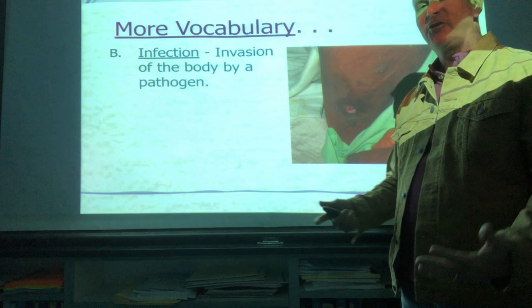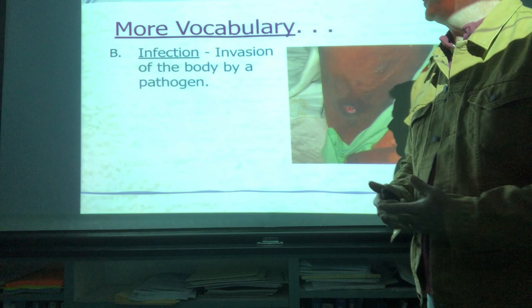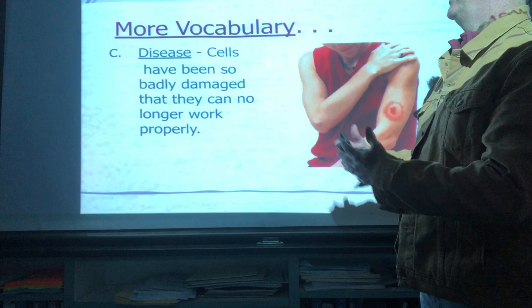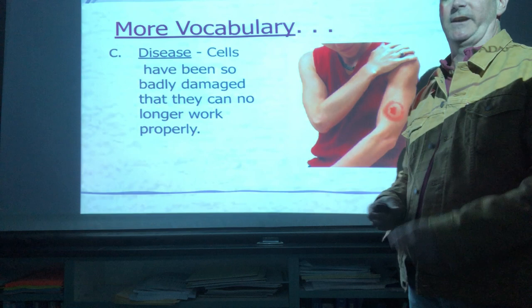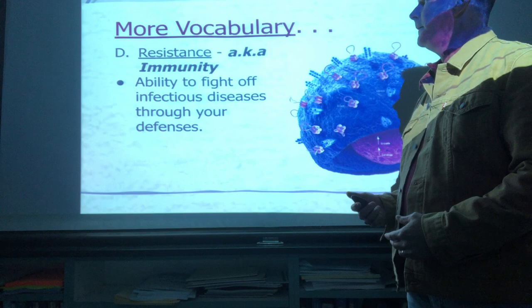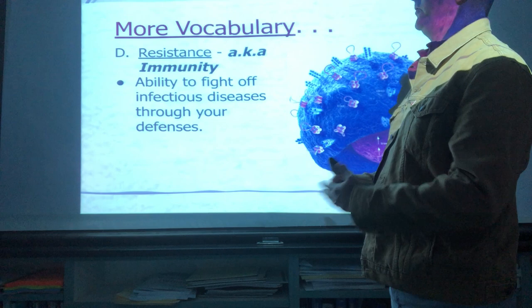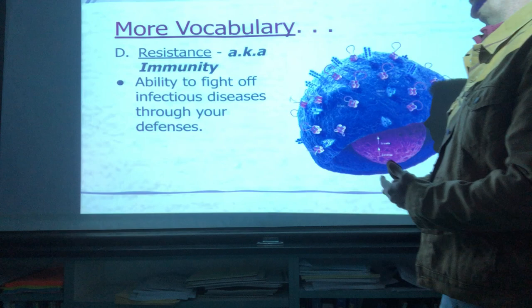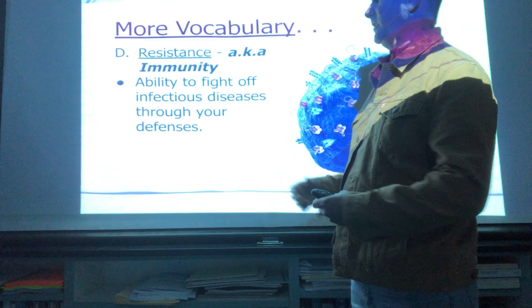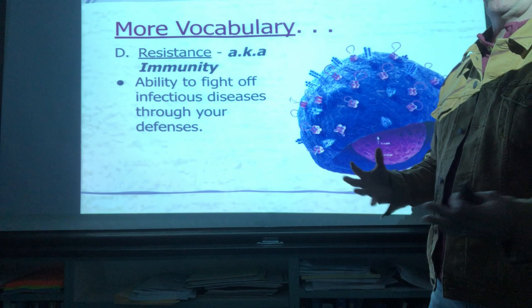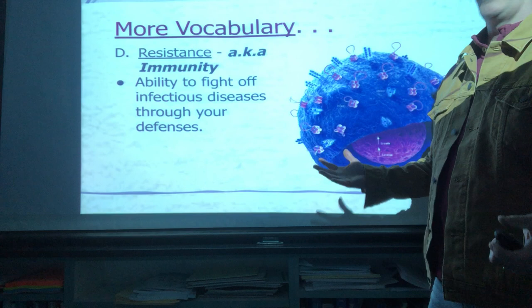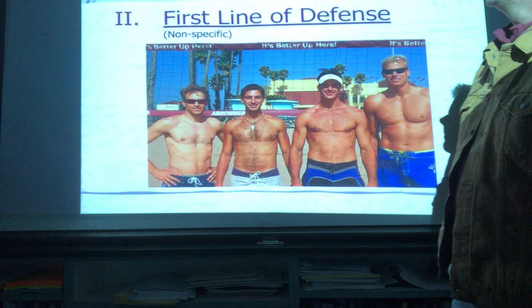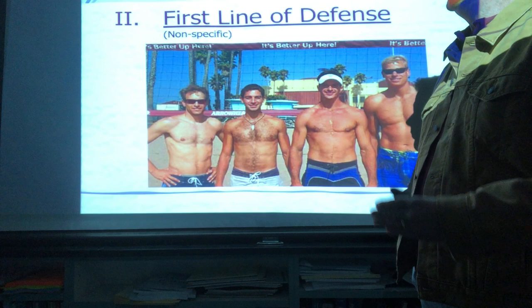An infection by definition is when your body has been invaded by one of these five pathogens. A disease is where pathogens have created so much havoc that they've damaged cellular tissue so badly it can no longer work properly. We always want to build up what's called resistance, also known as immunity — the ability to fight off infectious diseases through our defenses, whether it's one defense or all three combined. Your body actually has a strong immunity to a number of different pathogens.